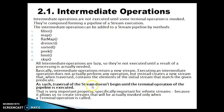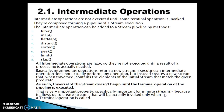Traversal of the stream does not begin until the terminal operation of the pipeline is executed. This is a very important property, specifically important for infinite streams, because it allows us to create streams that will actually be invoked only when the terminal operation is called. If your stream is infinite, you will have to limit it by calling some API, else it will execute indefinitely.